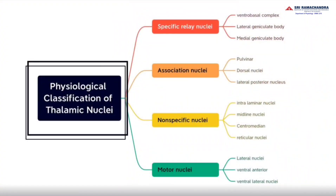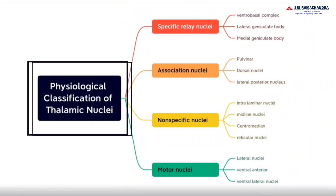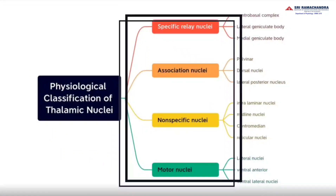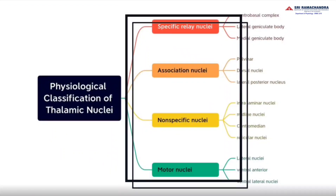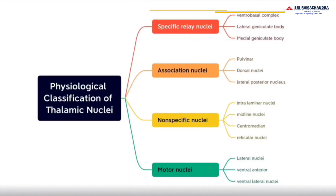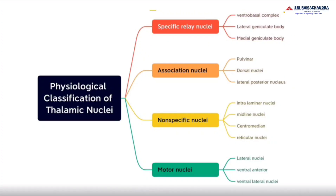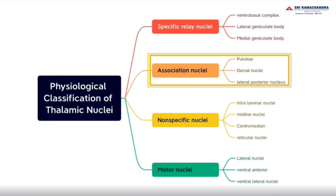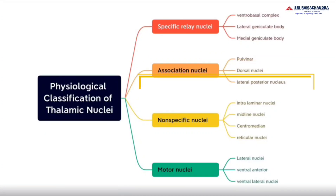Physiological classification of thalamic nuclei is classified into four parts: specific relay nuclei, association nuclei, nonspecific nuclei, and motor nuclei. The specific relay nuclei consist of the ventral basal complex, the lateral geniculate body, and the medial geniculate body. The association nuclei consist of the pulvinar, dorsal nuclei, and the lateral posterior nucleus.